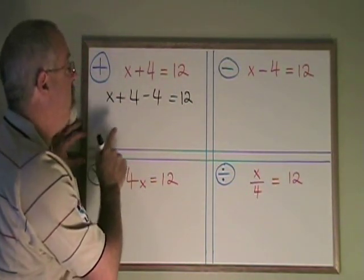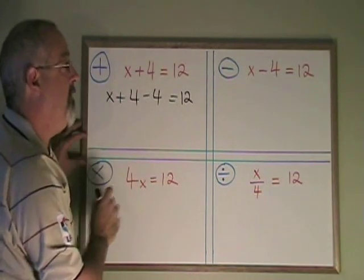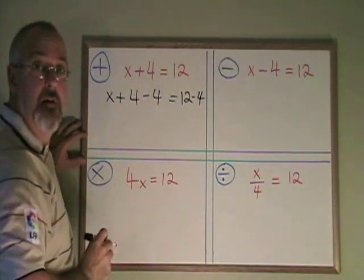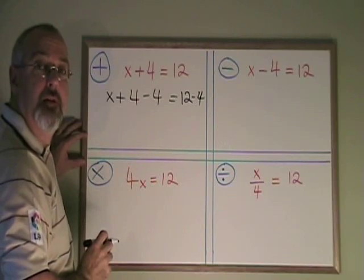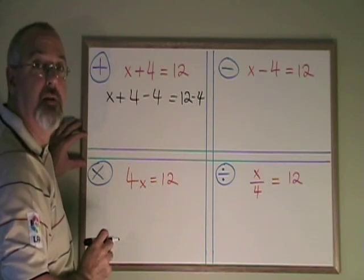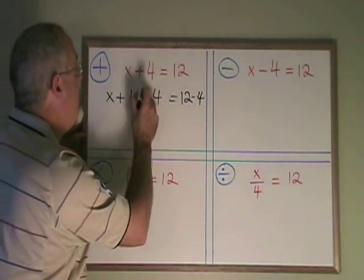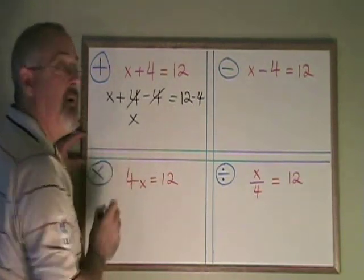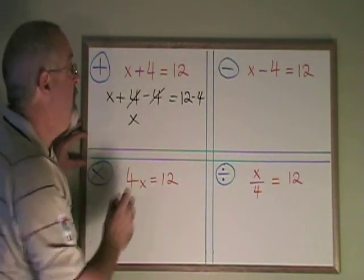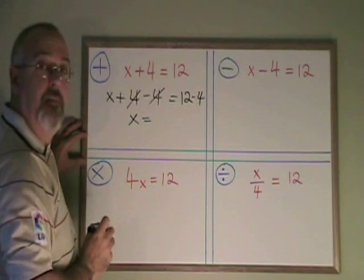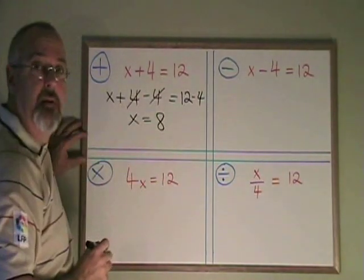But the rule of algebra is if I'm subtracting a 4 from the left, I have to subtract the 4 from the right as well. Whatever I do on the left side of the equals, I have to do on the right side as well. These cancel. My x is now alone, which is what I wanted, and is equal to 12 minus 4, which is 8. I have my answer.